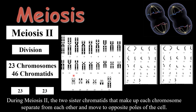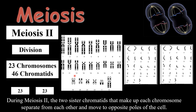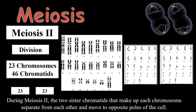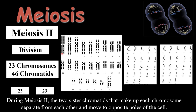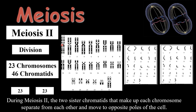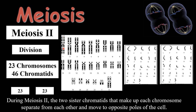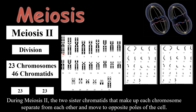In Meiosis 1, one parent cell gives rise to two daughter cells, each containing 23 chromosomes — one cell with 23 and the other with 23. These were formerly homologous chromosomes separated in Meiosis 1. As you can see, these chromosomes contain chromatids — sister chromatids attached to each other through the centromere. In Meiosis 2, these sister chromatids are separated and move towards the opposite poles.